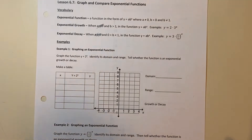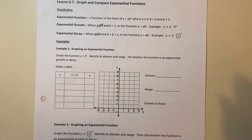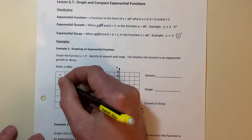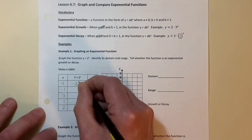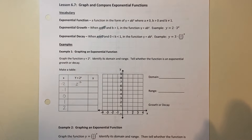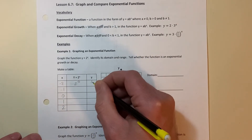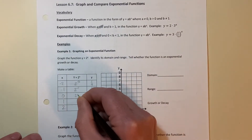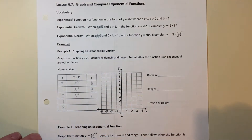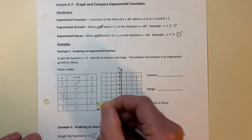How we're going to graph these is we're just going to make a table of values. We're also going to talk about domain and range. To graph these, let's make a table: negative two, negative one, zero, one, and two — just plug them in. Two to the negative two: using properties of exponents, negative exponents move it down, you square it, you get one-fourth. Two to the negative one becomes one-half. Two to the zero is one. Two to the first is two. Two to the second is four.